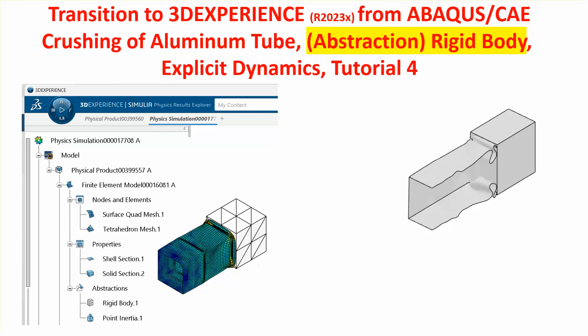Hello, people. This is the fourth tutorial I'm preparing for people who want to transition from Abaqus CAE to the 3D Experience platform. The first three videos dealt with using explicit dynamics in 3D Experience — Abaqus' explicit version — to crush an aluminum tube with a block. In the first video, I modeled the block with solid elements and gave it material properties for steel and ran it.